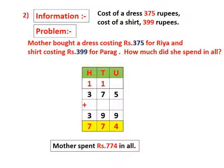First we will draw the columns: 100s, 10s, and units. Then we write the numbers: 3 hundreds, 7 tens, 5 units plus 3 hundreds, 9 tens, 9 units. We start addition from the units place. In the units place, 5 units plus 9 units is equal to 14 units. 14 units means 1 ten and 4 units.